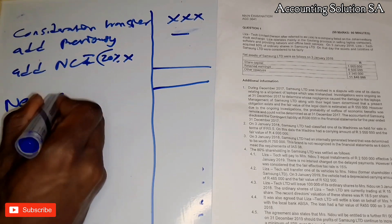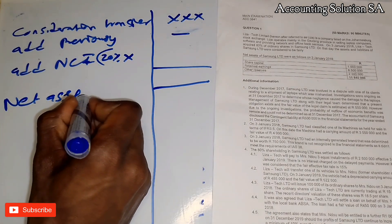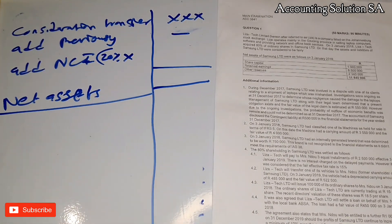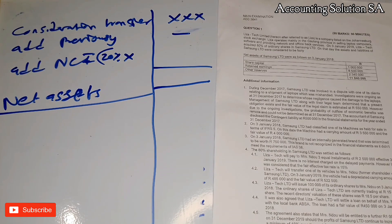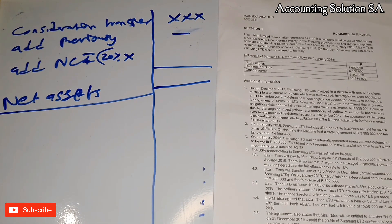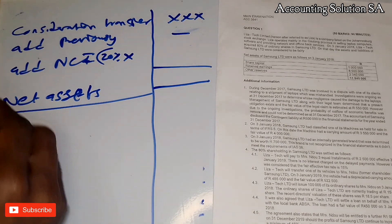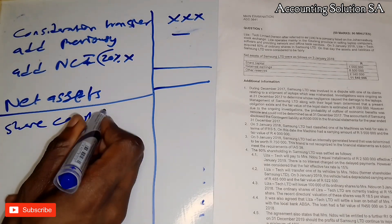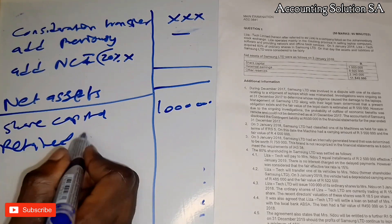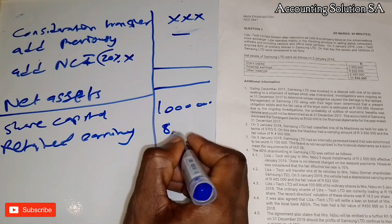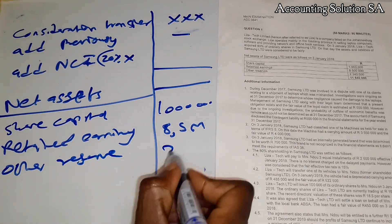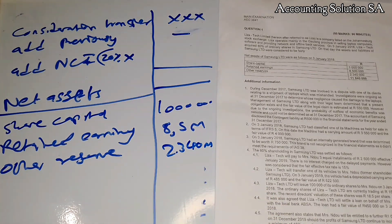Now let's start with the net assets calculation. In this case, they give us the equity section — remember, equity equals net assets, which equals assets minus liabilities. We have share capital of 1 million, retained earnings of 2.5 million, and other reserves of 2.340 million.